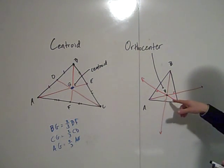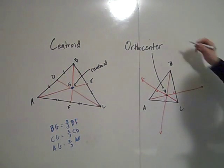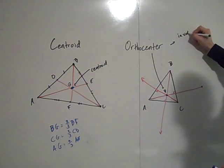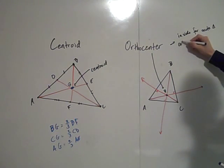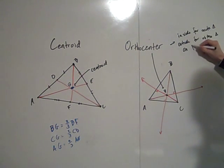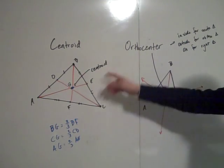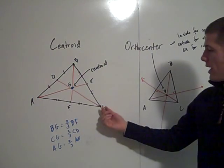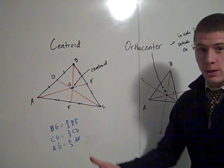The orthocenter was inside this triangle because it's acute. For an acute triangle, it's inside; it's actually outside for an obtuse triangle; and it's on the triangle for a right triangle. The centroid always lies inside — always, always — because the median starts at the vertex and goes to the midpoint of the opposite side. There's no room for that to be outside the triangle.